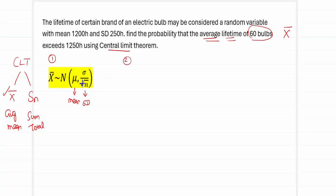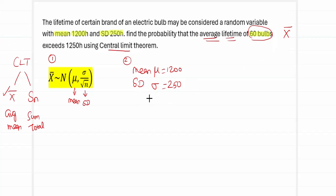The second step is to collect the data from the question. The mean is given as 1200 hours, so mu equals 1200. The standard deviation is given as 250 hours — be careful to use sigma, not sigma squared, since sigma squared represents variance. So sigma equals 250. The third requirement is n: 60 bulbs have been used, therefore n equals 60.